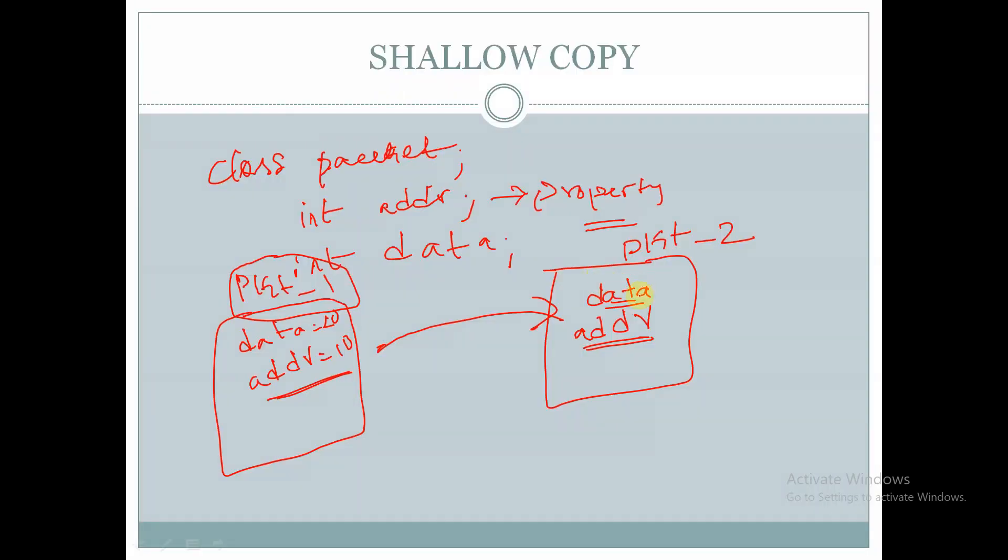So data will be equal to 20 and address will be equal to 10. The contents are copied from pkt1 handle to pkt2 handle.